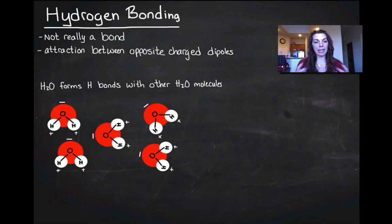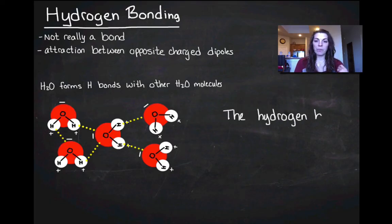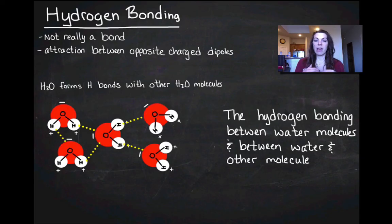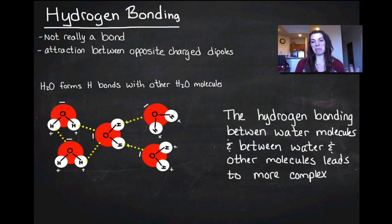Now, when you have a bunch of water hanging out together, what you get is they line up so that the negative dipole from the oxygen is going to kind of face the positive dipole from the hydrogen. And then what you're going to get is hydrogen bonds forming between them. Remember there's no actual transfer or sharing of electrons. It's just an attraction between the negative and the positive. So I'm going to represent those with yellow dotted lines. So the hydrogen bonding between the water molecules and between water and other things is what's really going to be interesting to us in biology. And it's going to lead to more complex properties.